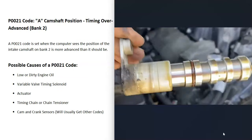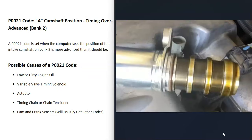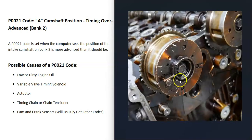The next thing that could cause this problem is a variable valve timing solenoid. These VVT solenoids, along with the actuator, can adjust the timing while the engine's running. This can be very beneficial — it can help the engine run better at higher RPMs and improve gas mileage. Oil flows through these variable valve timing solenoids, and if they malfunction or get clogged with old dirty oil, it can cause issues.